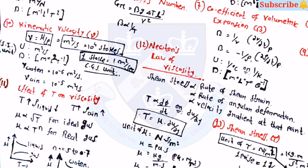The tenth property is kinematic viscosity, nu equals mu by rho, with units of meter squared per second, which equals 10-raised-to-4 Stokes. One Stoke equals one centimeter squared per second. The dimension is m0 l2 t-minus-1. Kinematic viscosity for water is 10-raised-to-minus-6 meter squared per second and for air it is 10-raised-to-minus-5 meter squared per second.